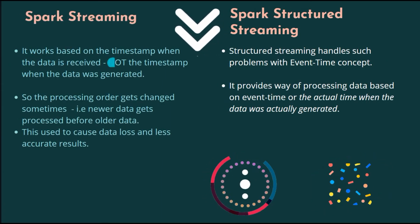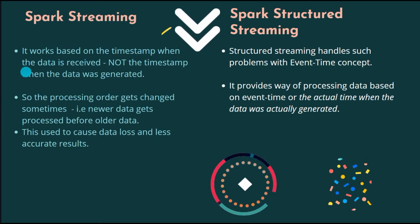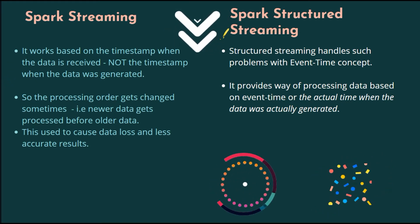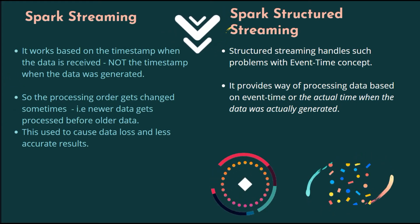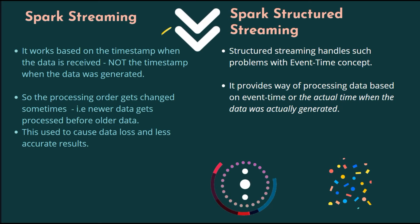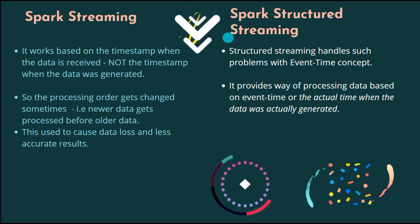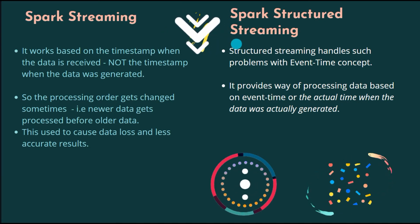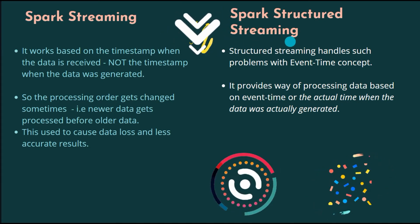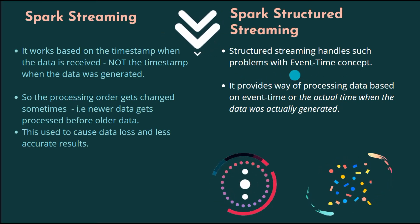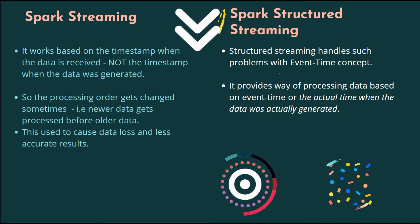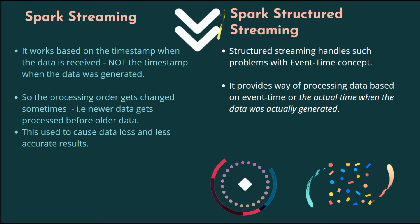Spark Streaming works based on the timestamp when the data is received, not the timestamp when the data was generated. This used to cause data loss and less accurate results sometimes, because the processing order gets changed — newer data could get processed before older data. This problem is handled in Spark Structured Streaming through the event time concept, which provides a way of processing data based on the actual time when the data was generated.